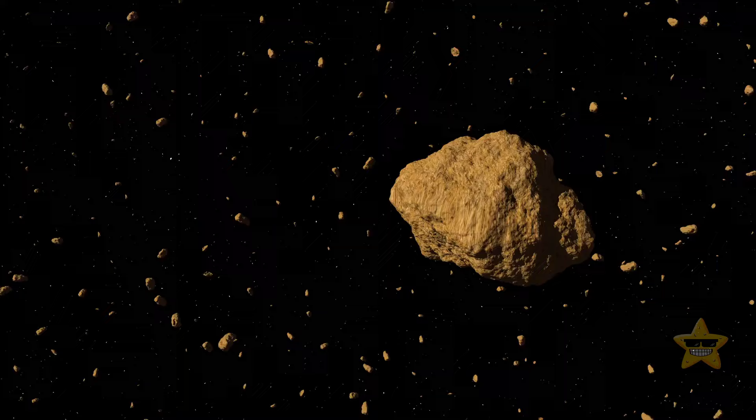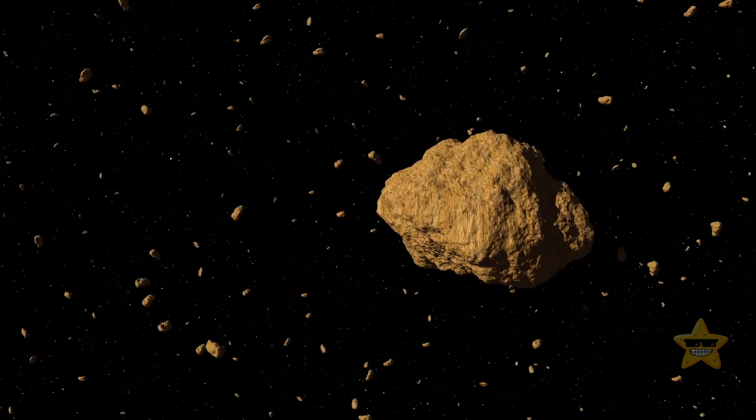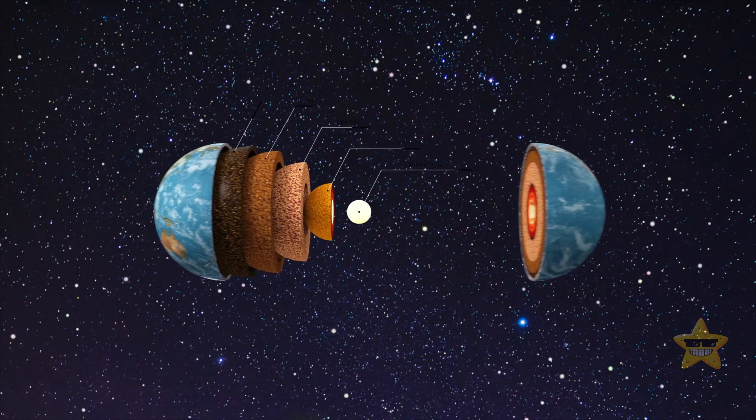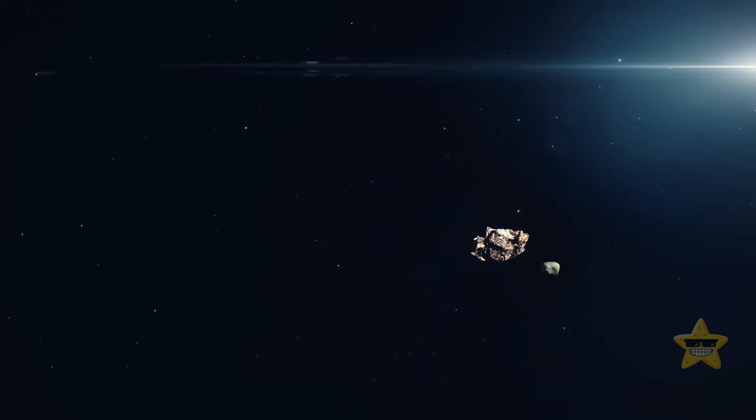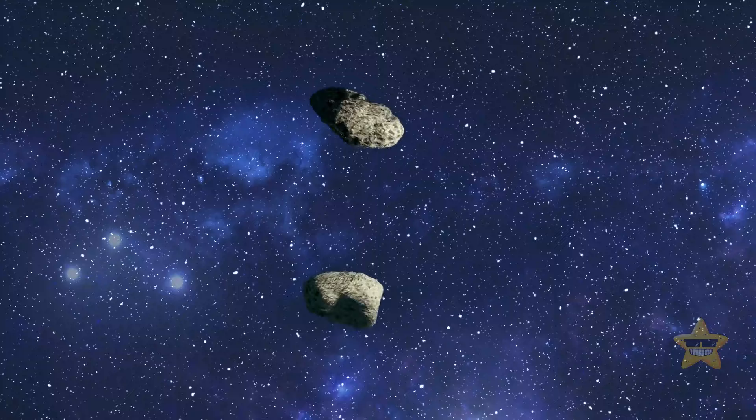Asteroids often have irregular shapes, especially smaller ones. At the same time, large space bodies can have more of a spherical shape. Unlike planets, asteroids don't consist of layers. They're made of different kinds of metals and rocks and have no atmosphere. Funnily enough, some asteroids have moons of their own, and there are even asteroid binaries where two asteroids of similar size orbit each other.